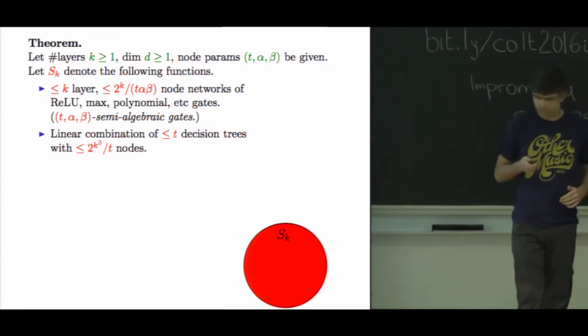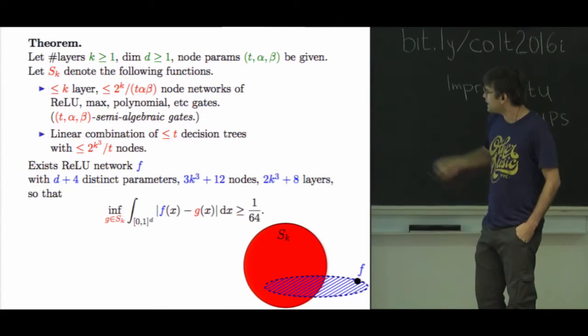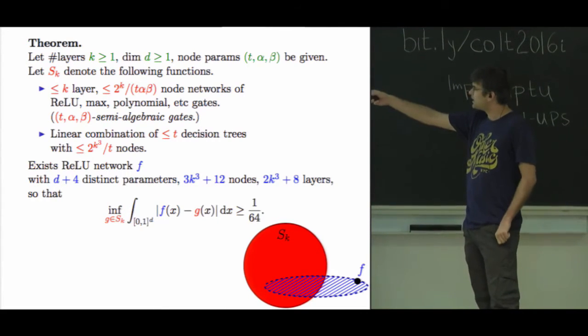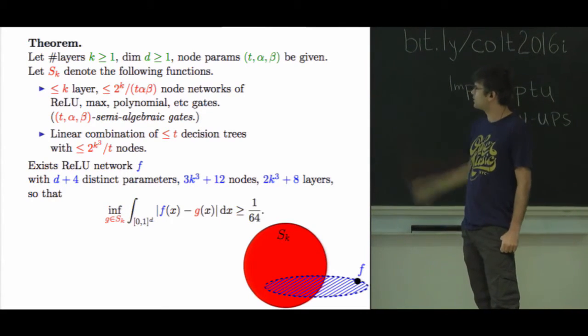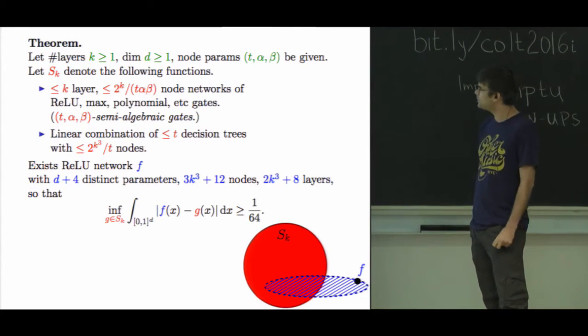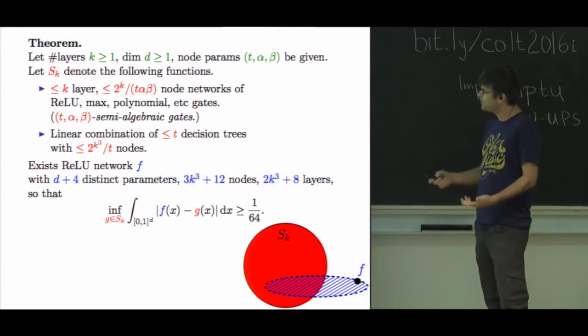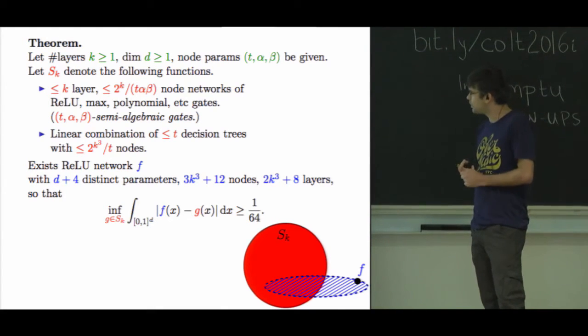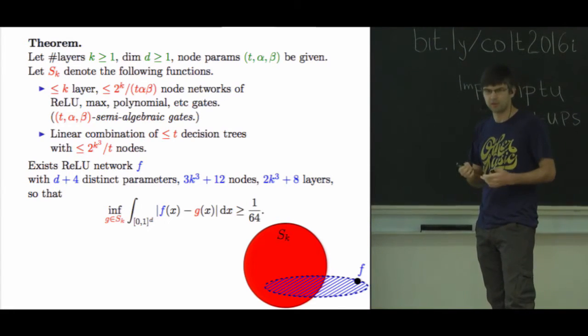And just to kind of trash on other parts of my life and other research fields, I threw in boosted decision trees so we can say decision trees also have some trouble. So that's S_k. Now we're going to construct a function f which has a much smaller description length. So we're in k^3 layers and nodes polynomial, and the distance between any one of these shallow functions and this small function is at least 61/64 in the L1 distance on the cube.